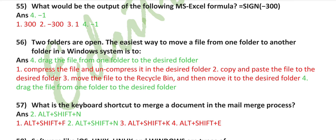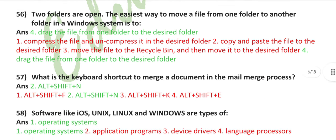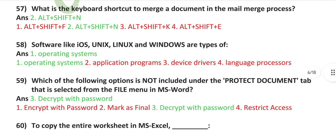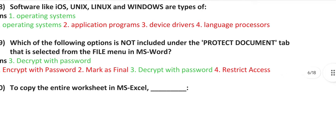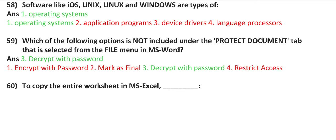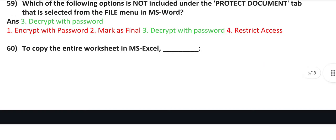What would be the output of the following MS Excel formula equals sine minus 300? Minus one. Two folders are open. The easiest way to move a file from one folder to another folder in a Windows system is to drag the file from one folder to the desired folder. What is the keyboard shortcut to merge a document in the mail merge process? Alt plus Shift plus N. Software like iOS, Unix, Linux, and Windows are types of operating systems.